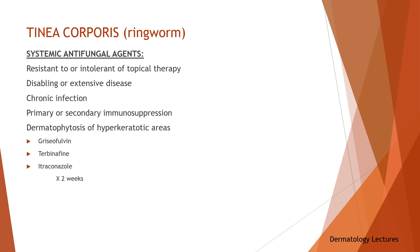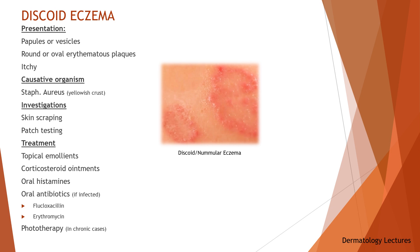Now we will discuss discoid eczema. This is most common in teens and patients aged 60 to 70 years. It presents with papules or vesicles that form round or oval erythematous plaques anywhere on the body, but usually on the limbs. The plaques become dry, scaly, and resolve leaving areas of persistent brown hyperpigmentation. Sometimes central clearing of the plaques means it resembles tinea. The lesions are extremely itchy and repeated scratching risks permanent scarring and secondary infections, usually with Staphylococcus aureus that forms a yellowish crust. Investigations include skin scrapings to exclude tinea, swab for culture and sensitivities if secondary infection is suspected, and occasionally patch testing for allergies.